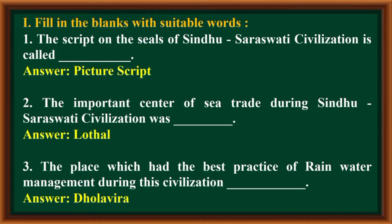First main: fill in the blanks with suitable words. The script on the seals of Sindhu Saraswati Civilization is called Picture Script. The important center of sea trade during Sindhu Saraswati Civilization was Lothal. The place which had the best practice of rainwater management during this civilization was Dholavira.